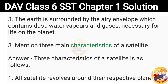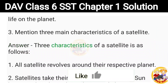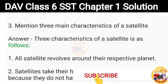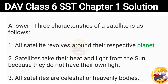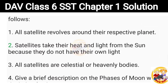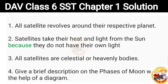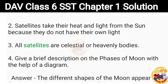3. Mention three main characteristics of a satellite. Answer: Three characteristics of a satellite are as follows. 1. All satellites revolve around their respective planet. 2. Satellites take their heat and light from the Sun because they do not have their own light. 3. All satellites are celestial or heavenly bodies.